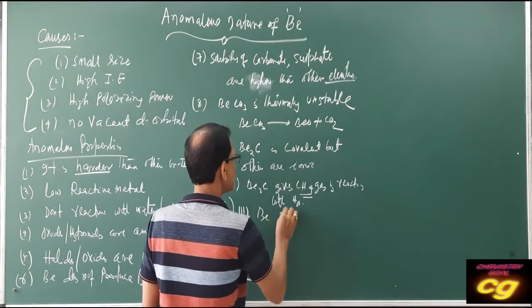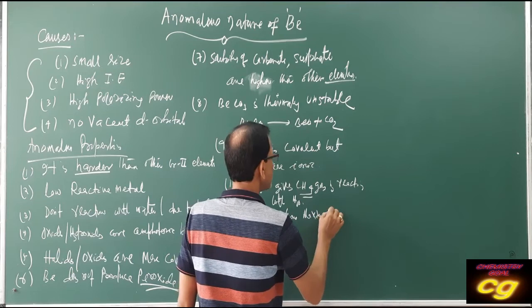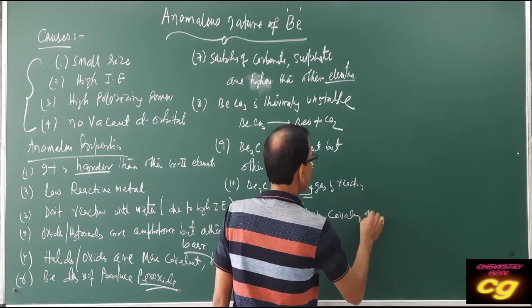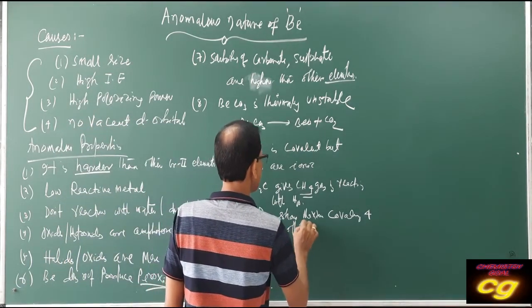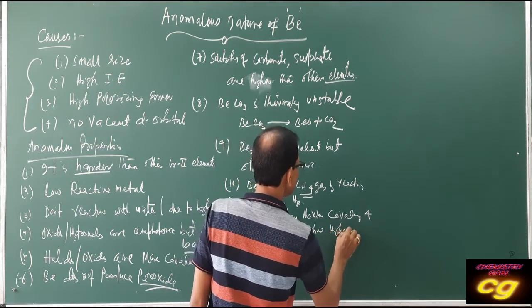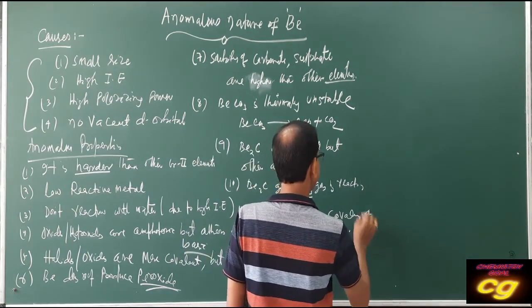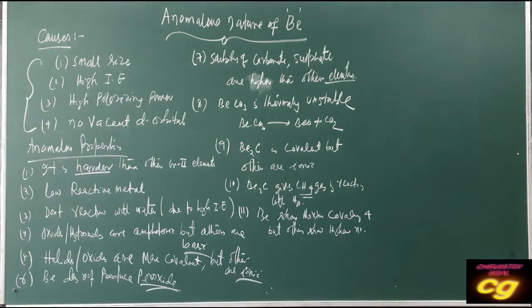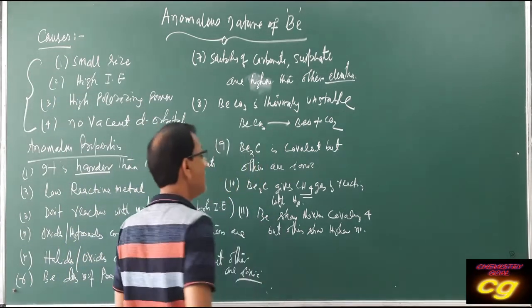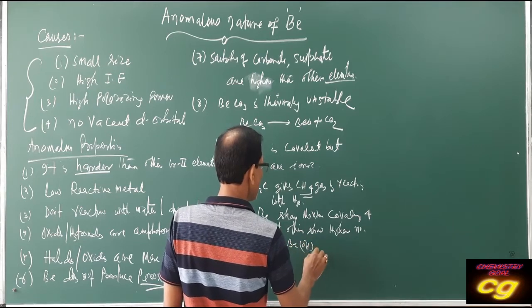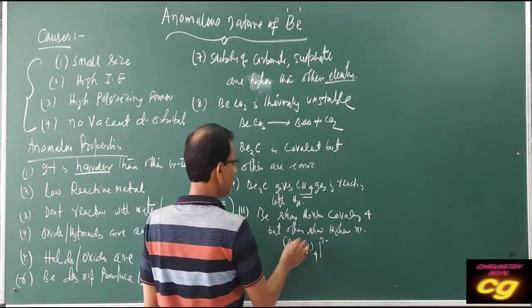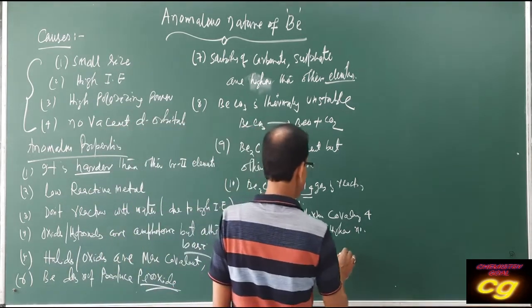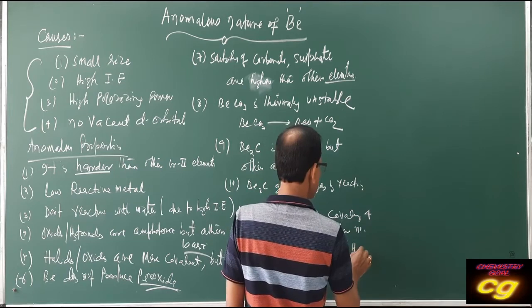Beryllium shows a maximum covalency of 4, but others show higher numbers. For example, the beryllate ion BeO₄²⁻ shows beryllium with valency 4 as maximum. But aluminum can show covalency of 6 — higher covalency.